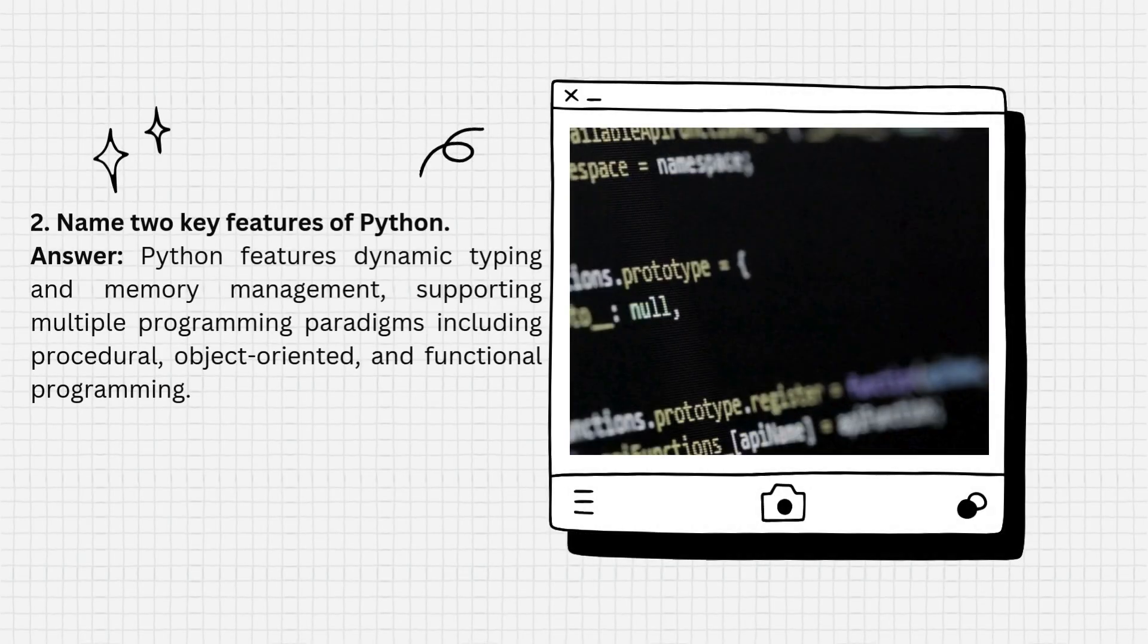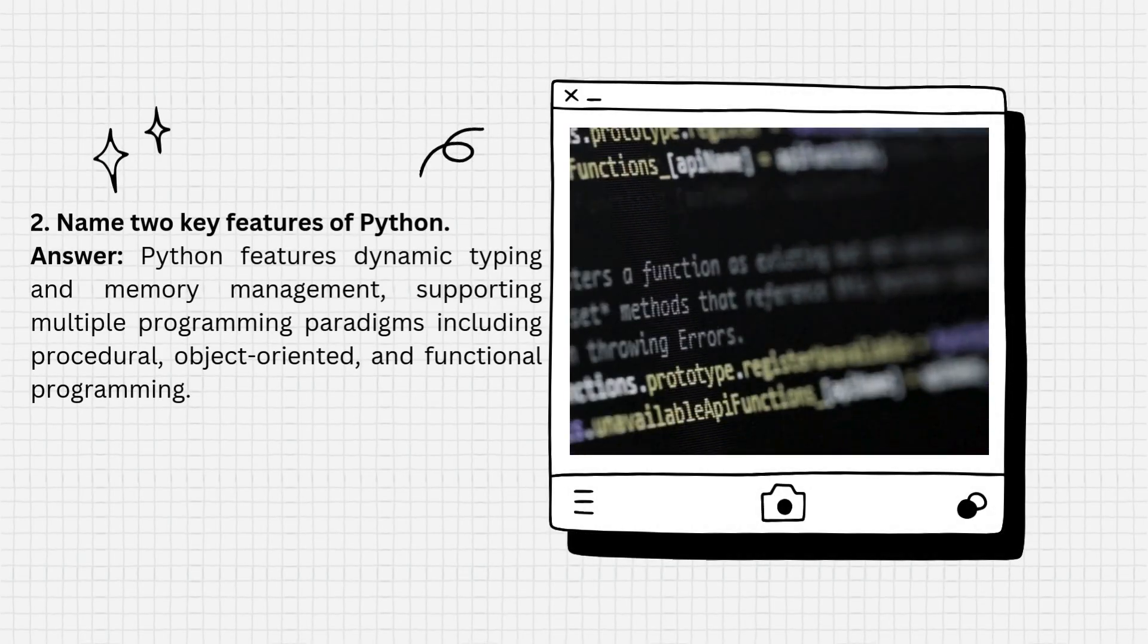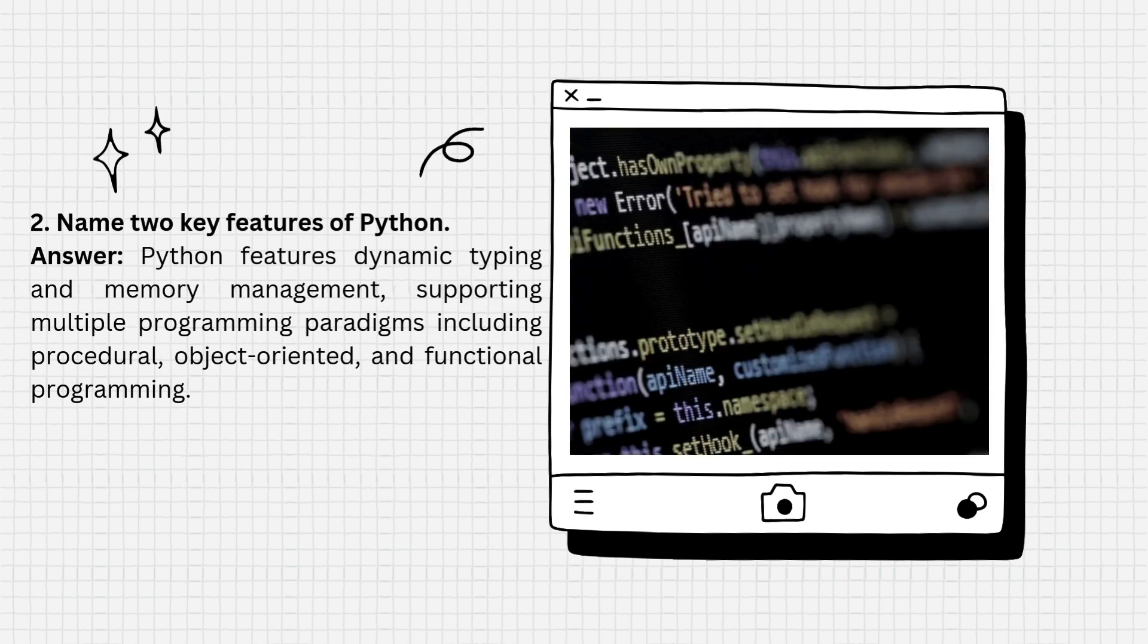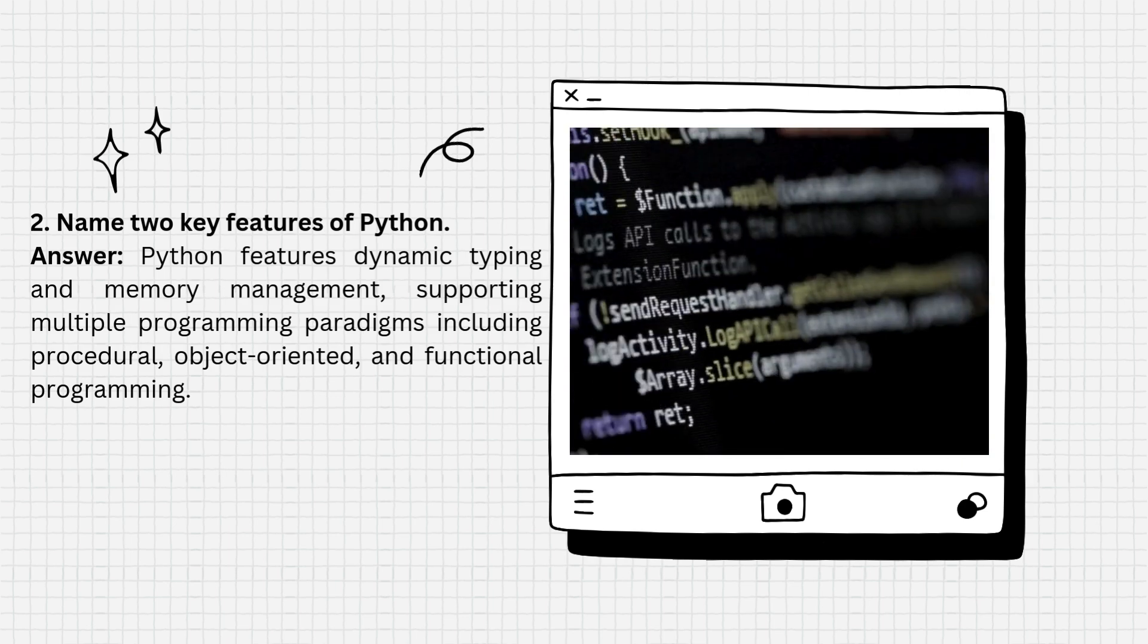Question 2: Name two key features of Python. Answer: Python features dynamic typing and memory management, supporting multiple programming paradigms.